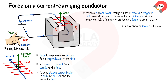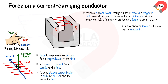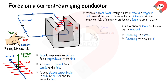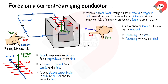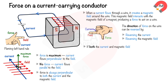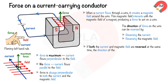The direction of force on the wire can be reversed by reversing the current, or by reversing the magnetic field. If both the current and magnetic field are reversed at the same time, the direction of the force remains the same.